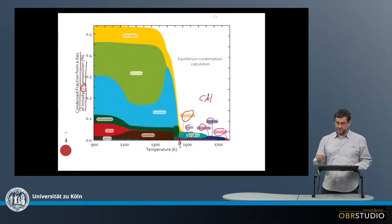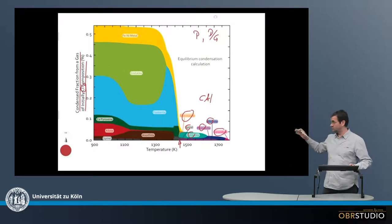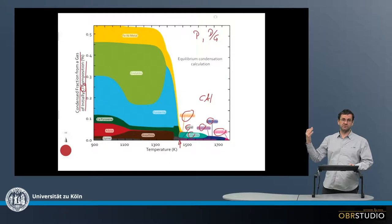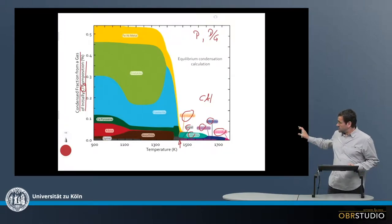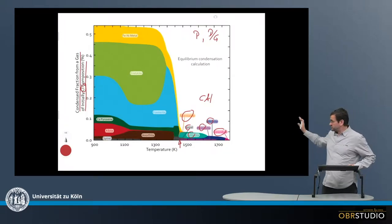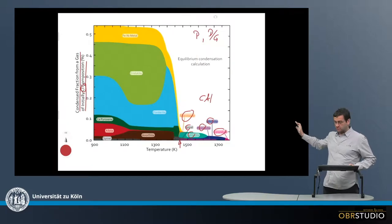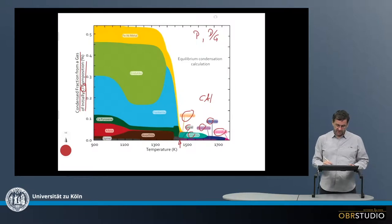So this entire calculation depends on the ambient pressure here, but also on the dust to gas ratio, which is a measure for the oxygen fugacity. So high dust to gas ratio would mean a lot of oxygen because there's a lot of dust and dust contains a lot of oxygen. Low dust to gas ratio means more reducing. And these parameters would change, for example, the x-axis scaling here a little bit.